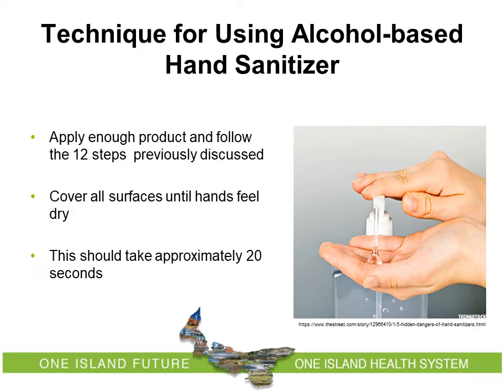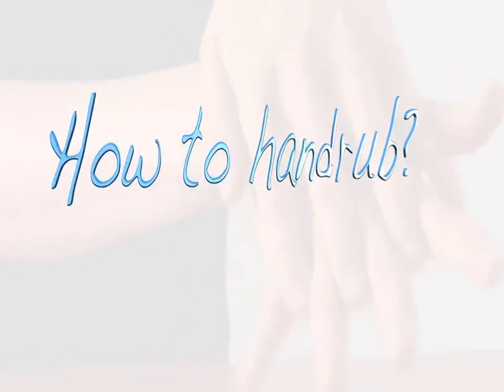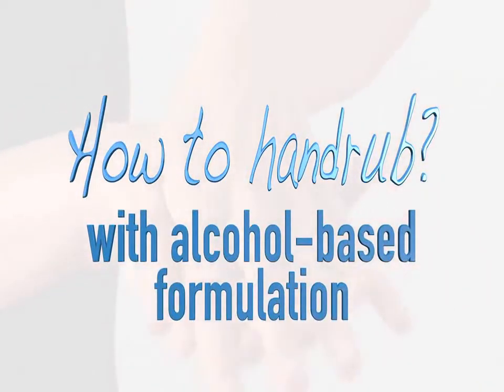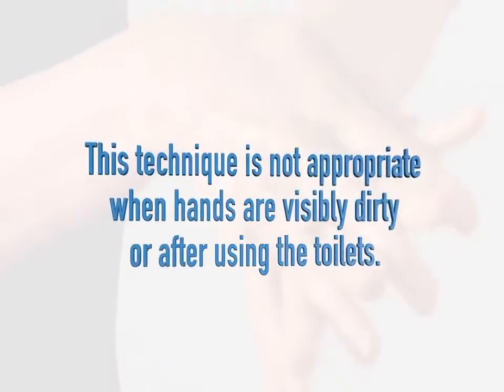Proper technique for using alcohol-based hand sanitizer: Apply enough product and follow the 12 steps previously discussed. Be sure to cover all surfaces until hands feel dry; this should take approximately 20 seconds. The next video is a WHO video demonstrating proper technique for alcohol-based hand sanitizer. Note that this technique is not appropriate when hands are visibly dirty or after using the toilet — in those cases, hand washing is required.